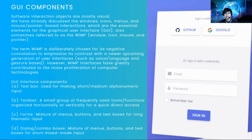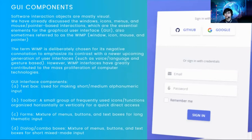The different components of GUI include text boxes — used when logging in to enter your name, email, and password. Toolbars are familiar if you've used Photoshop, Google Docs, Microsoft Word, or Microsoft Sheets — those toolbar elements at the top. Also, forms — mixtures of menus, buttons, and text boxes for long thematic input. And dialog or combo boxes, which are mixtures of menus, buttons, and text boxes for short mixed-mode input.